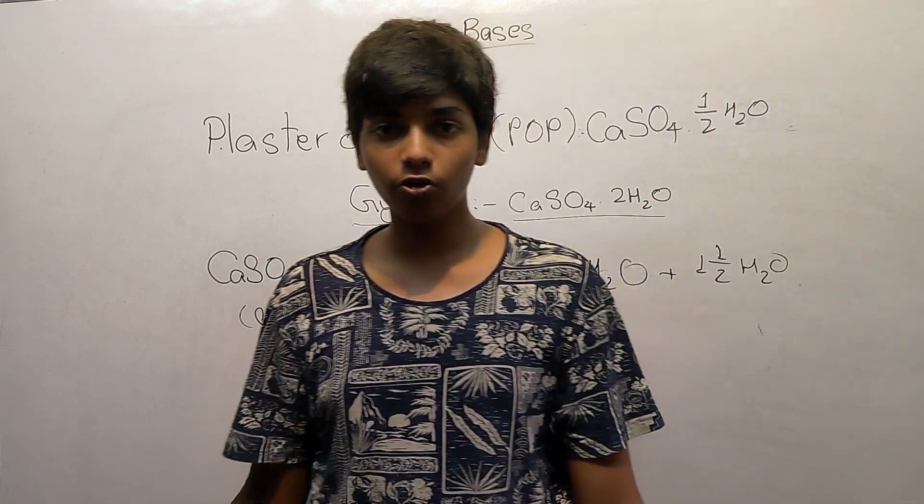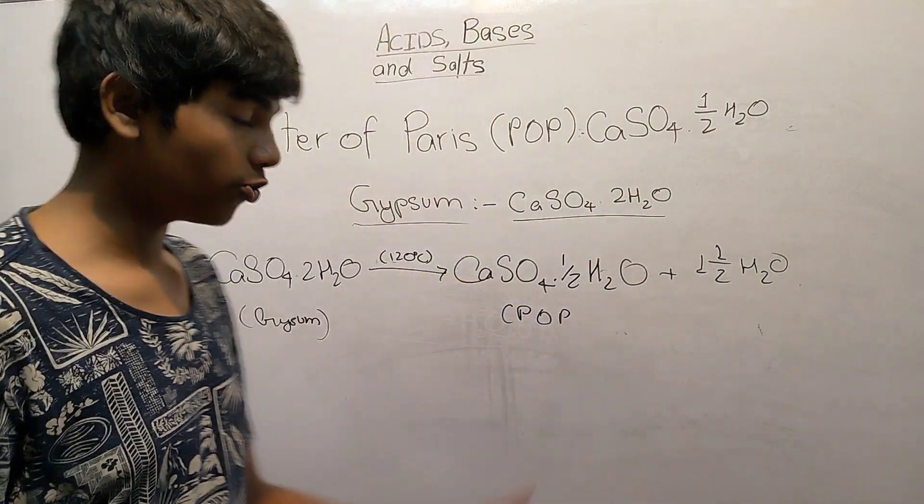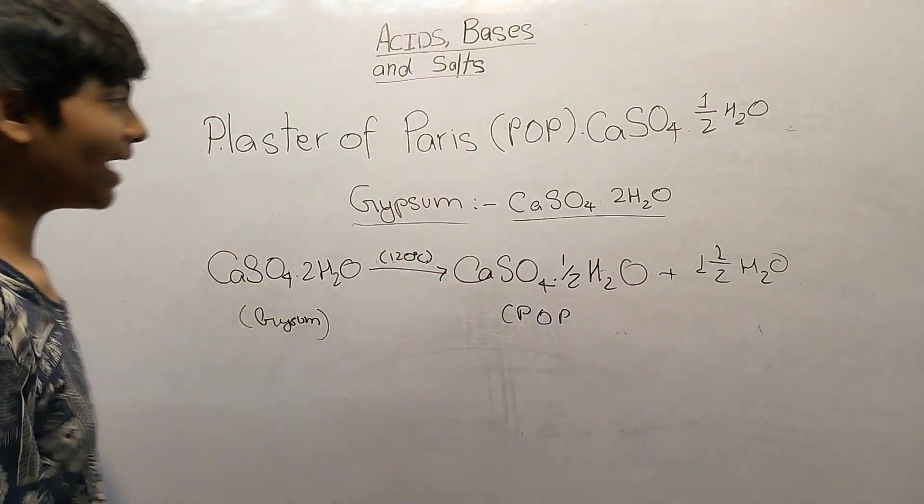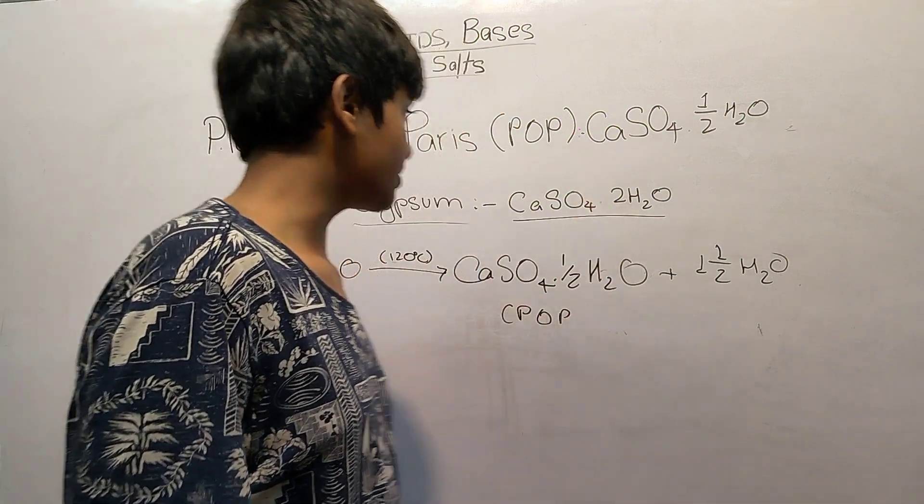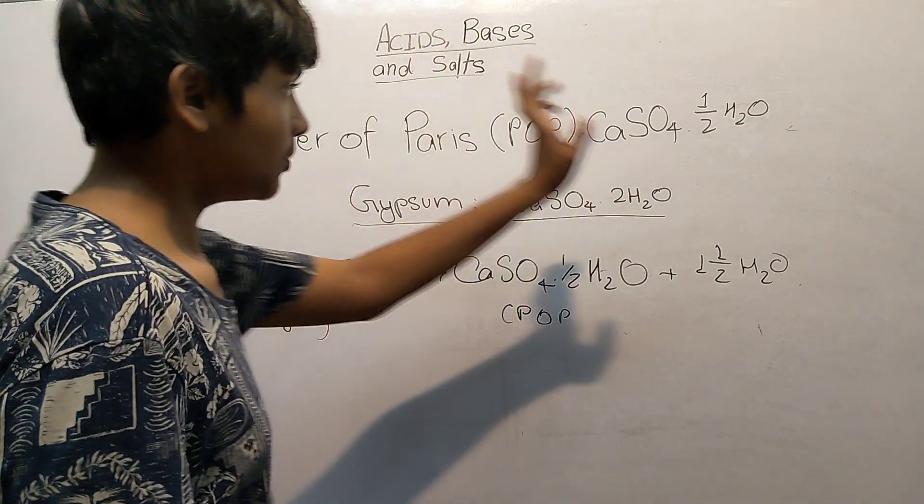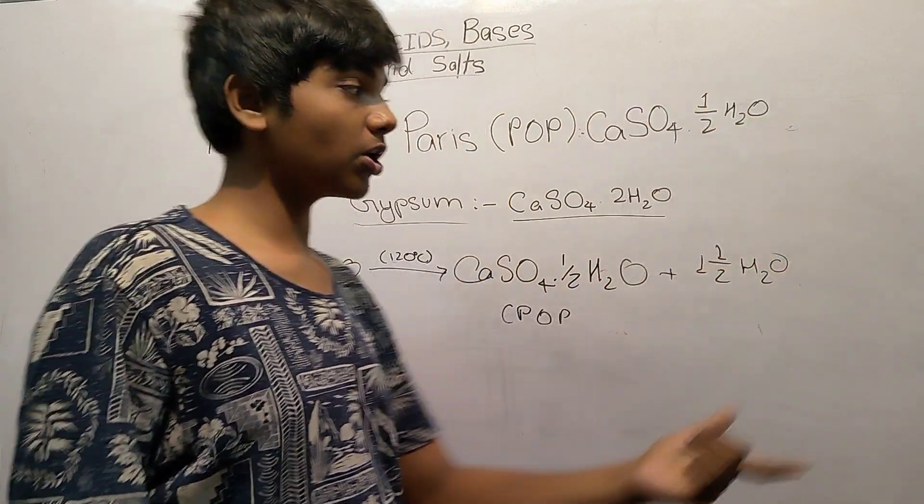What is Plaster of Paris used for? The designs that you have in your walls, in your ceilings, in your rooms - that is made out of Plaster of Paris. It is also used in making medicines. There is one special thing: it has a half water molecule, while the others have whole numbers.